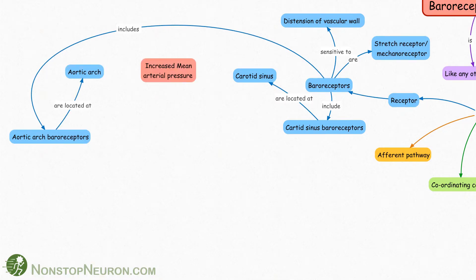Sudden increase in mean arterial pressure causes increased stretching of carotid sinus which leads to increased impulse generation from carotid baroreceptors. Same goes for aortic arch baroreceptors.